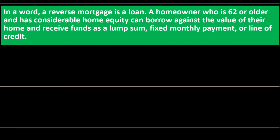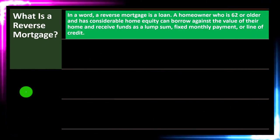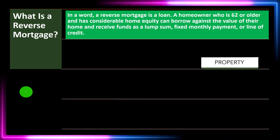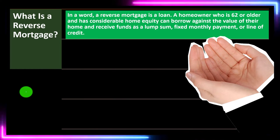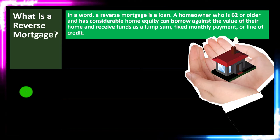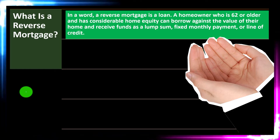A homeowner who is 62 or older and has considerable home equity can borrow against the value of their home and receive funds as a lump sum, fixed monthly payment, or line of credit. This is typically a retirement-type situation where people might have a significant amount of assets — meaning assets over liabilities — looking pretty good from a net asset standpoint.